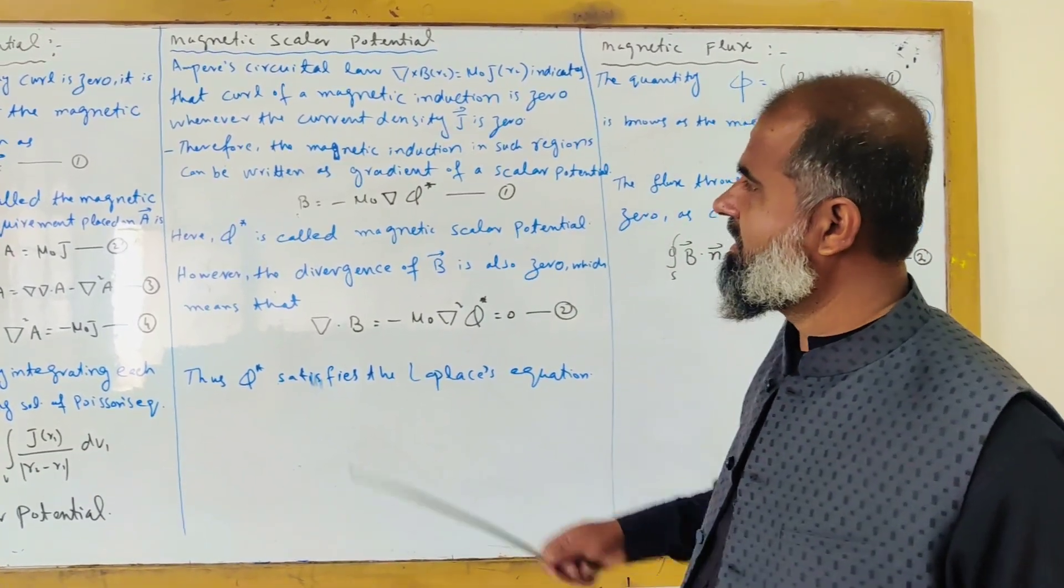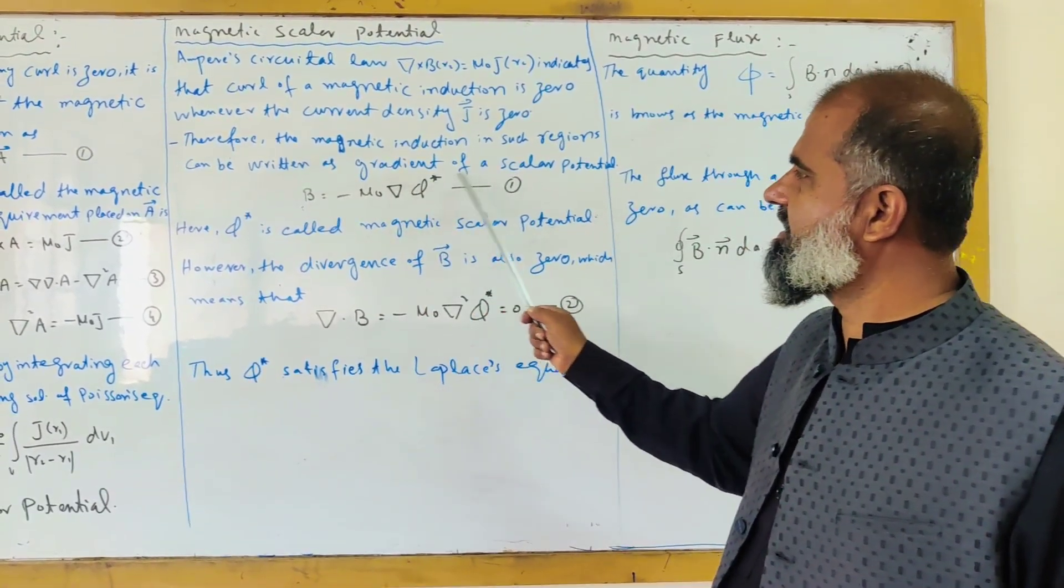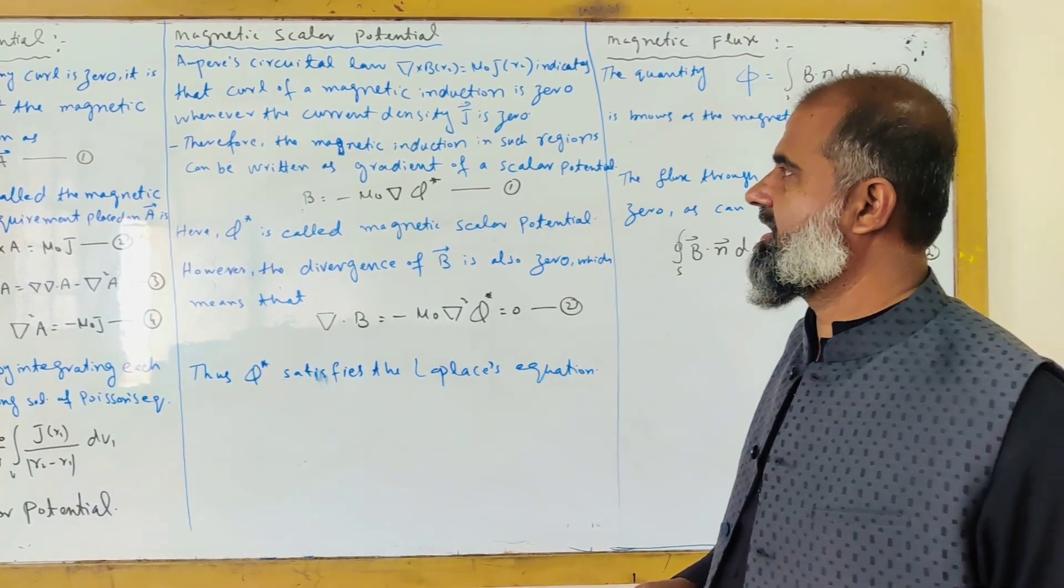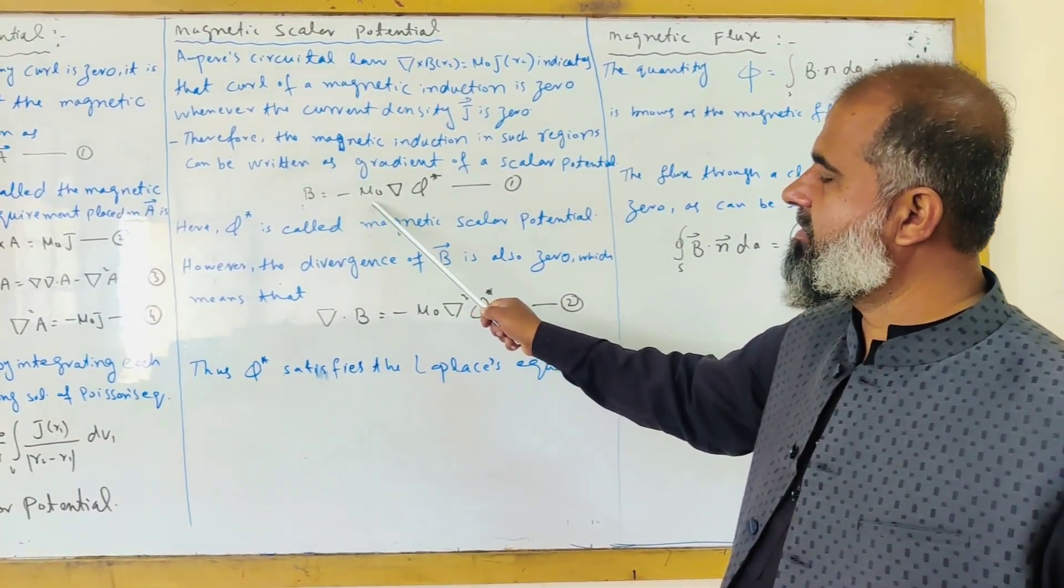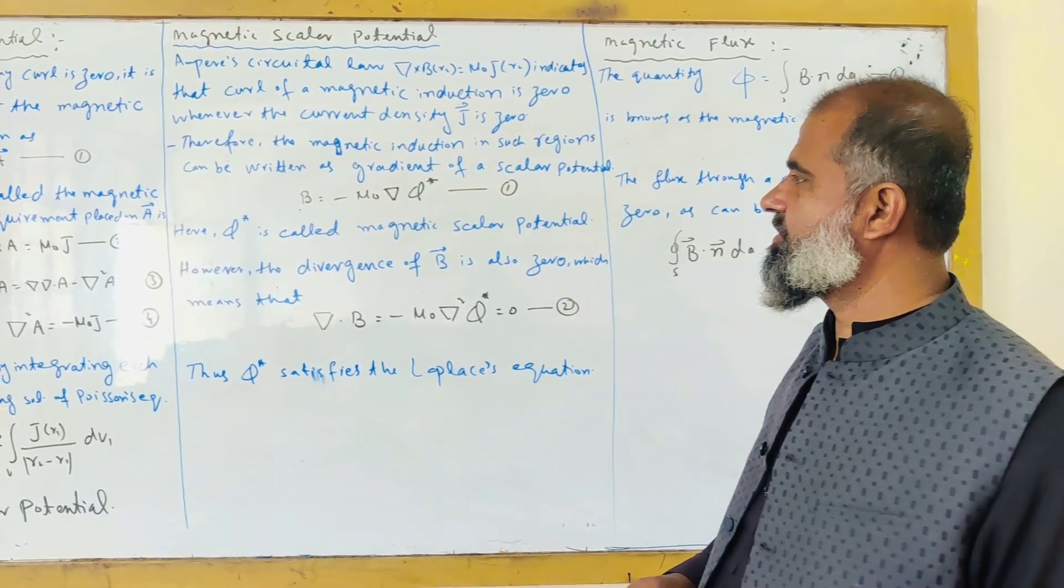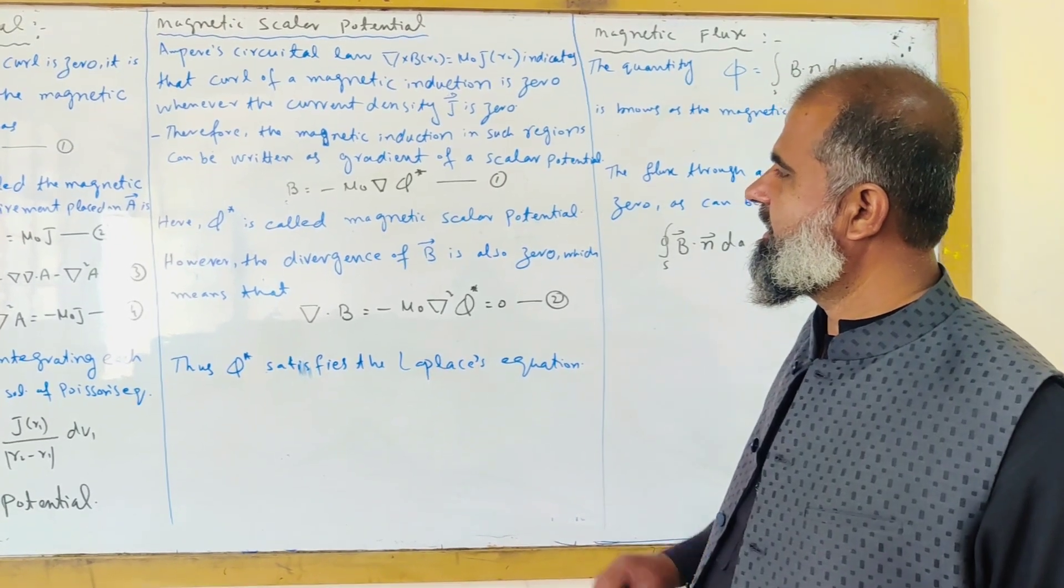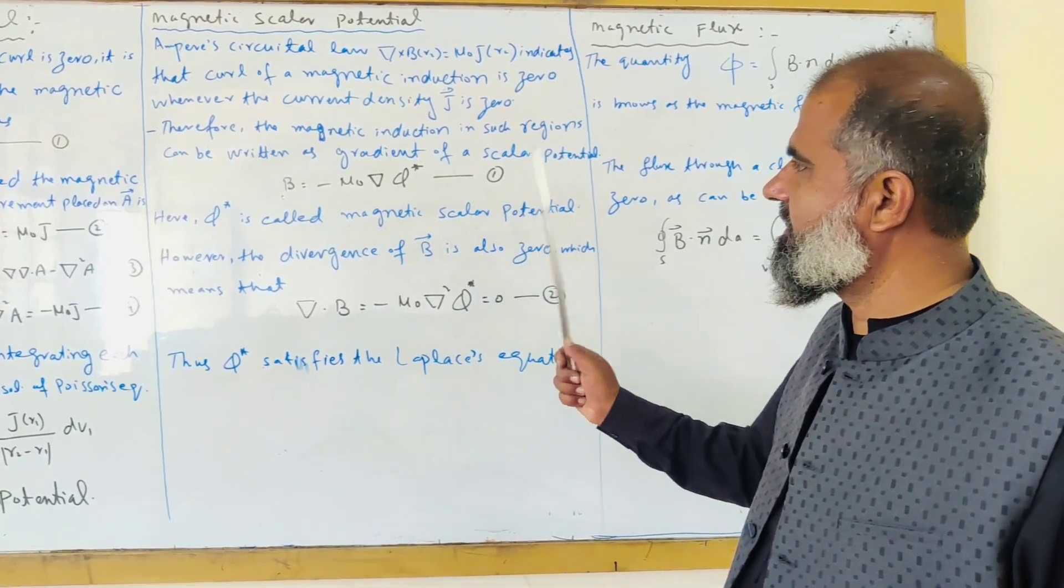Therefore, the magnetic induction in such regions can be written as the gradient of its scalar potential. B can be written as minus mu naught del phi star. This is equation 1.